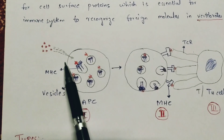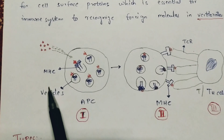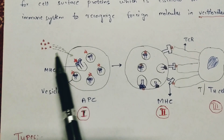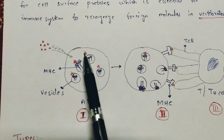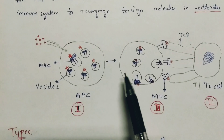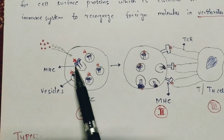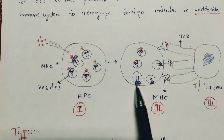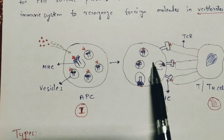In the first step, the vesicles open and the MHC molecule binds with the antigen. In the second step, when the antigen and MHC molecule interaction takes place, the total vesicle starts moving towards the cell membrane. Each and every vesicle moves towards the cell membrane.